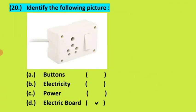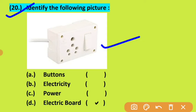Twentieth is: identify the following picture. Aapko is picture ko identify karna hai. Kya hai student ye? And your options are: buttons, electricity, power, ya electric board. Aapko kya show ho rahi hai? Buttons nahi hai, electricity bhi nahi hai kyunki hum usko dekh thodi sakte hain, power bhi nahi hai. So last option is electric board.